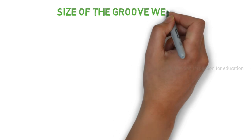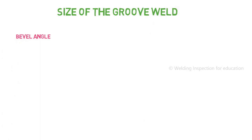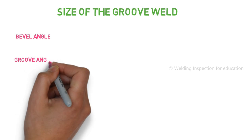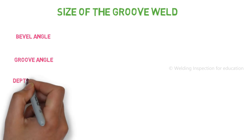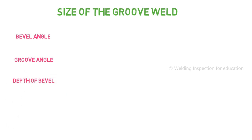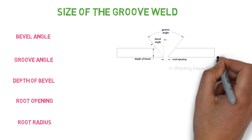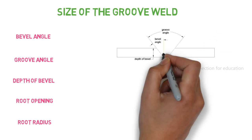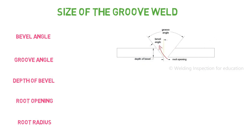Now we are going towards the size and welding symbol of the groove weld. Before understanding the welding symbol and its application for the groove weld, let's understand bevel angle, groove angle, depth of bevel, root opening, and root radius. First, bevel angle. Bevel angle is the single angle of a metal before making a connection. It is prepared by machining process or cutting processes like plasma cutting, oxygen cutting, or carbon cutting.